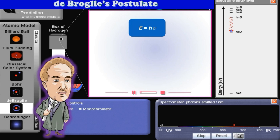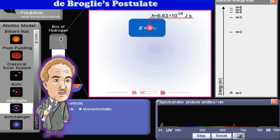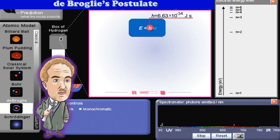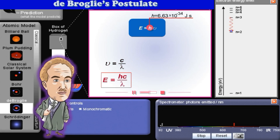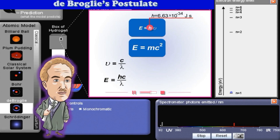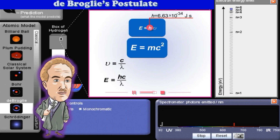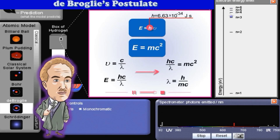Particles of light, called photons, have an energy E proportional to the frequency of the light wave, expressed by the following equation. Where h is the proportionality constant known as Planck's constant, and is equal to 6.63 times 10 to the power of minus 34 joules times seconds. Because light frequency is related to its wavelength by this equation, we have a corresponding expression. On the other hand, the energy of a particle of effective mass M moving with the speed of light C is given by Einstein's famous equation. Equating these two gives the de Broglie relation.